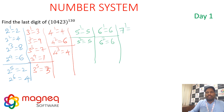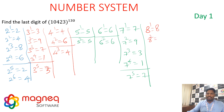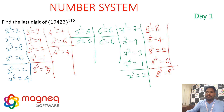For digit 7: 7¹ ends in 7, 7² ends in 9, 7³ ends in 3, 7⁴ ends in 1, 7⁵ ends in 7 — repetition after 4 powers. For digit 8: 8¹ ends in 8, 8² ends in 4, 8³ ends in 2, 8⁴ ends in 6, 8⁵ ends in 8 — repetition after 4 powers. For digit 9: 9¹ ends in 9, 9² ends in 1 — repetition after 2 powers.